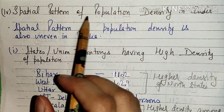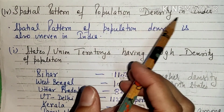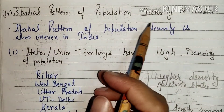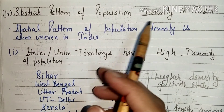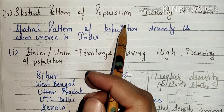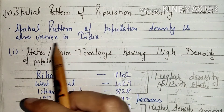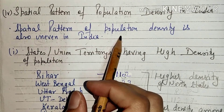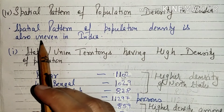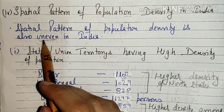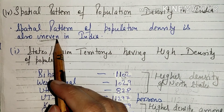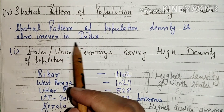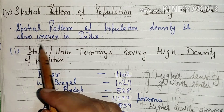Let's see the spatial pattern of population density in India. Where is the population density distributed? The spatial pattern of population density in India is uneven — meaning, somewhere more, somewhere less. Clear?